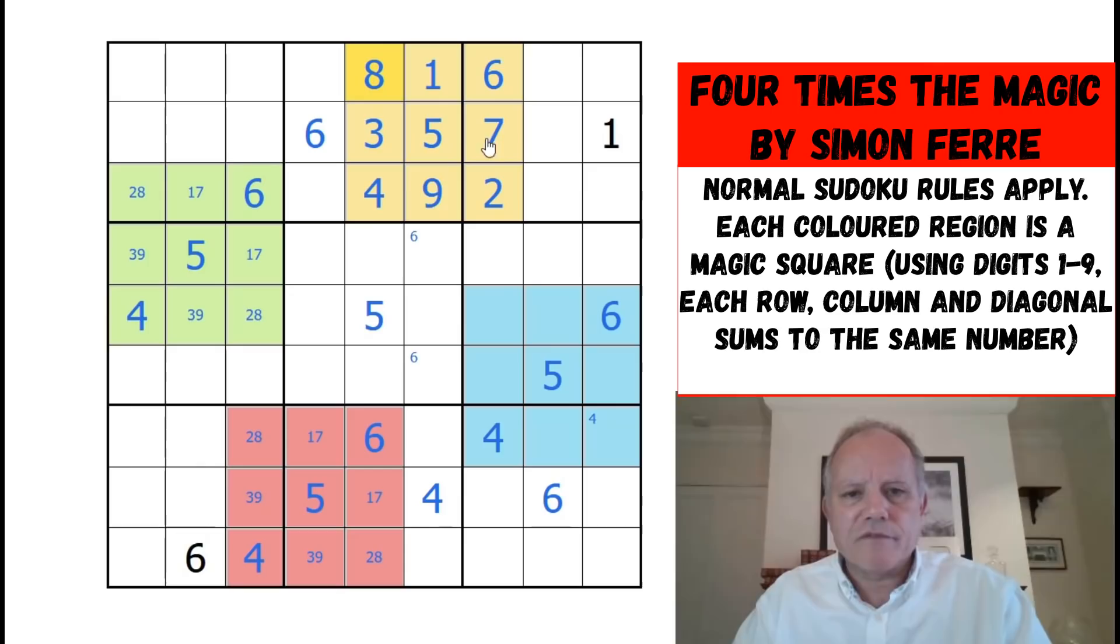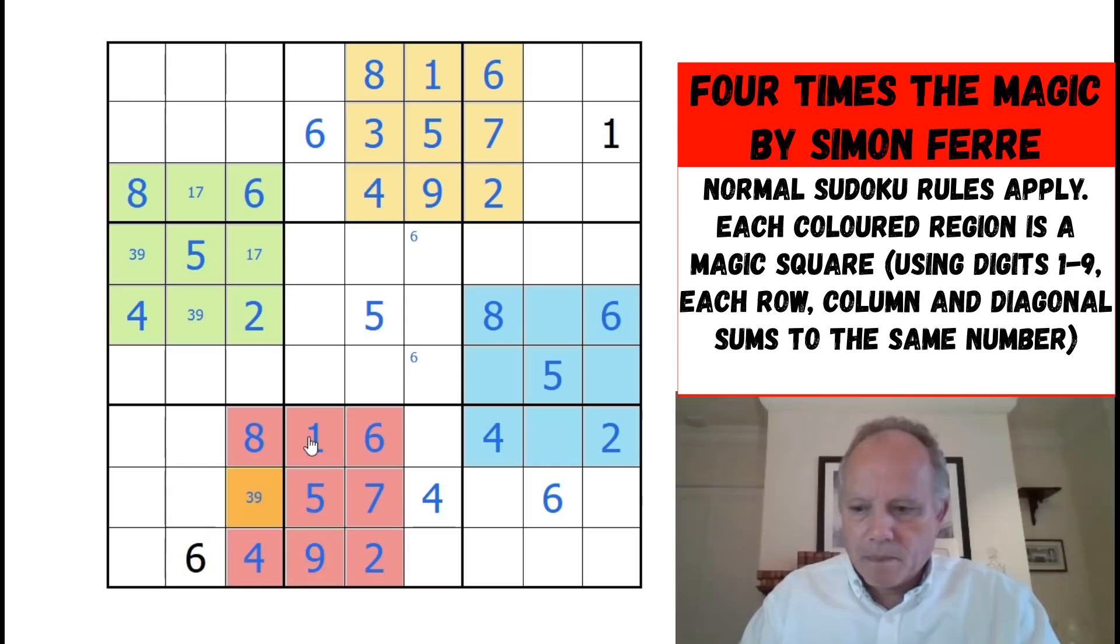Eight, one, six, 15. Three, five, seven's, 15. Four, nine, two. Eight, three, four. One, five, nine. Six, seven, two. And the diagonals, eight, five, two and six, five, four. So, all sorted. So, now that two is giving us that one. That eight is sorting out the evens over here. That two is sorting out the evens down here. And now we can finish off all the magic squares by adding up the rows and columns to 15. Brilliant. And we really are away with a good fast start.